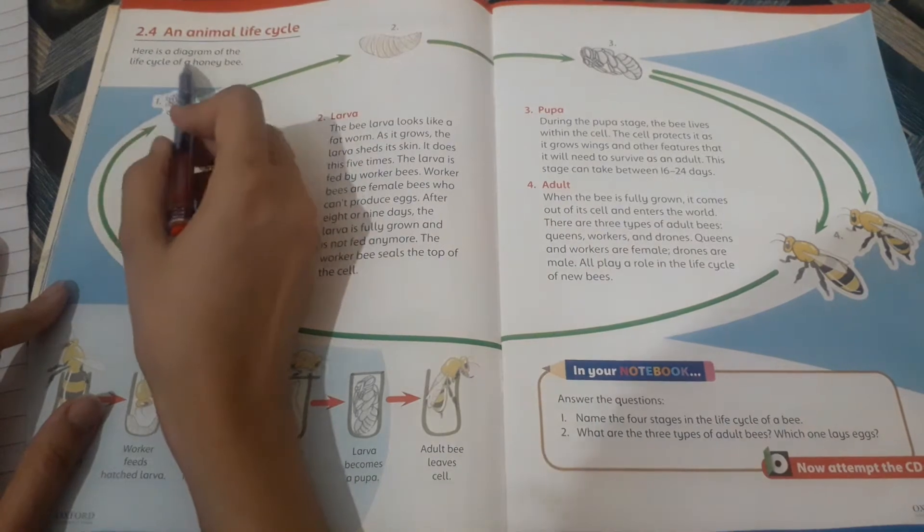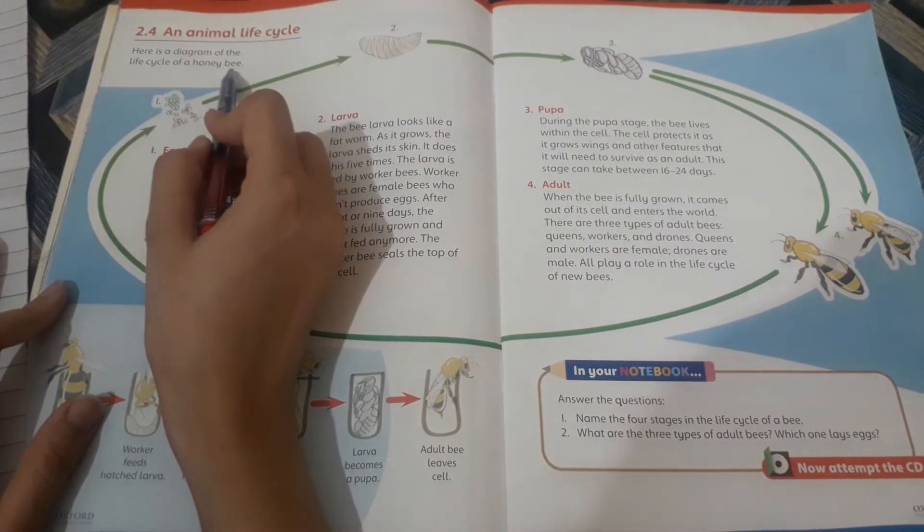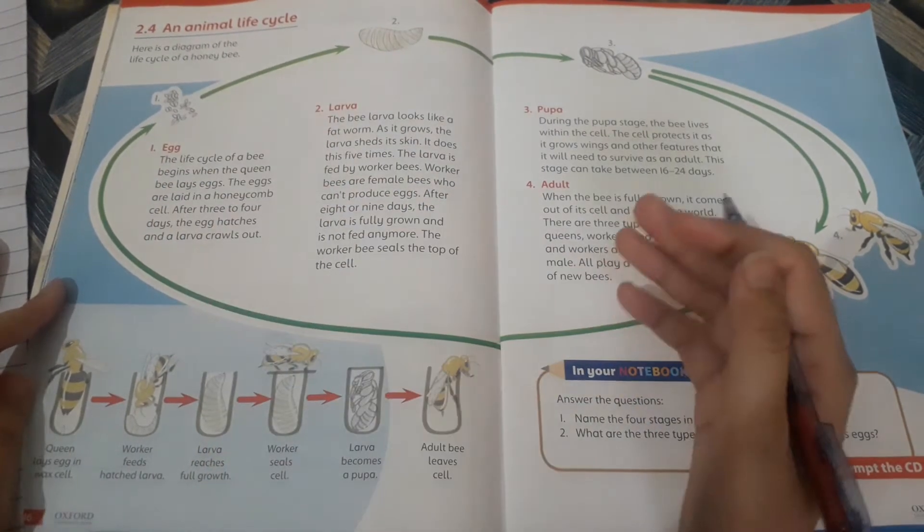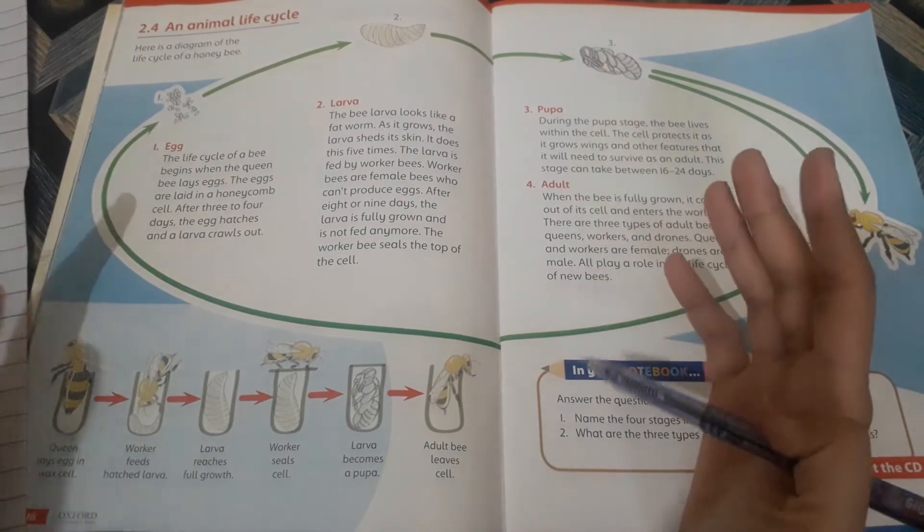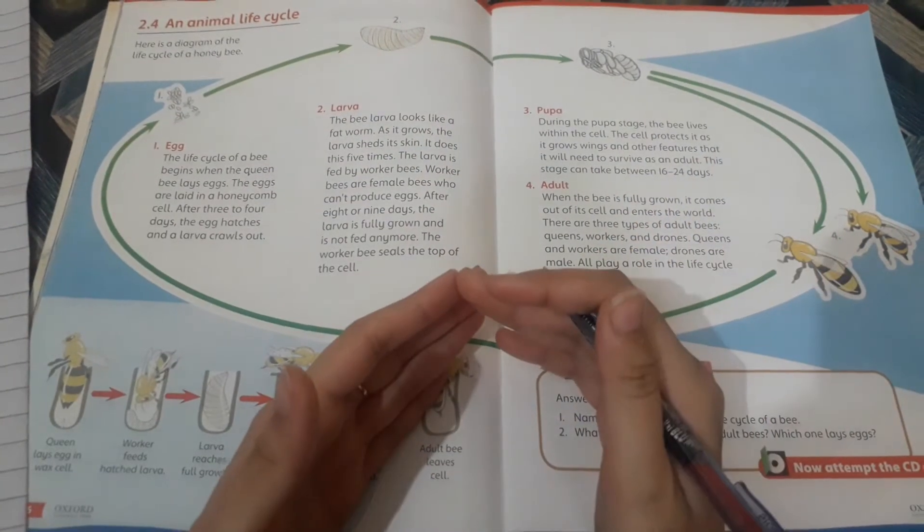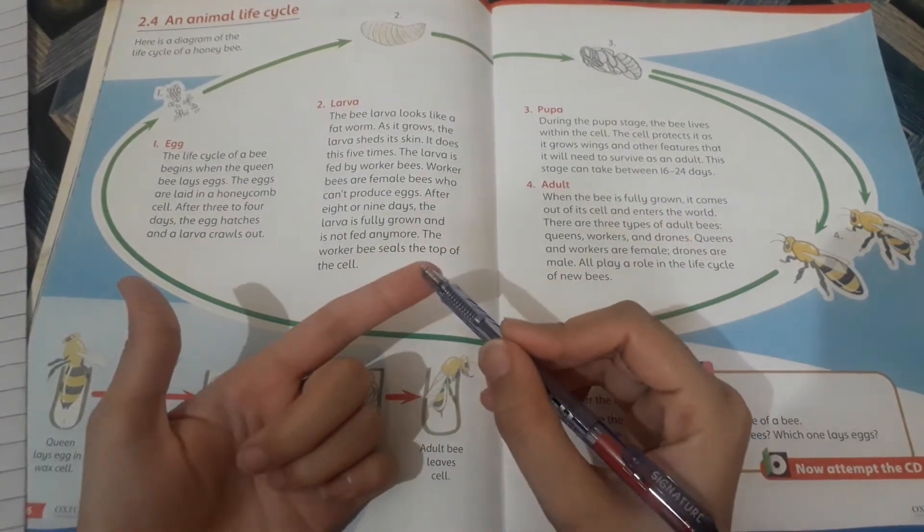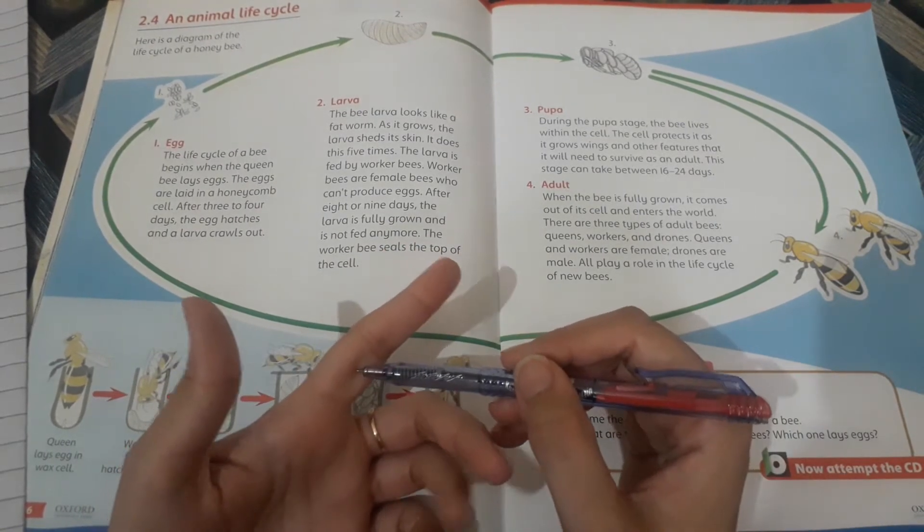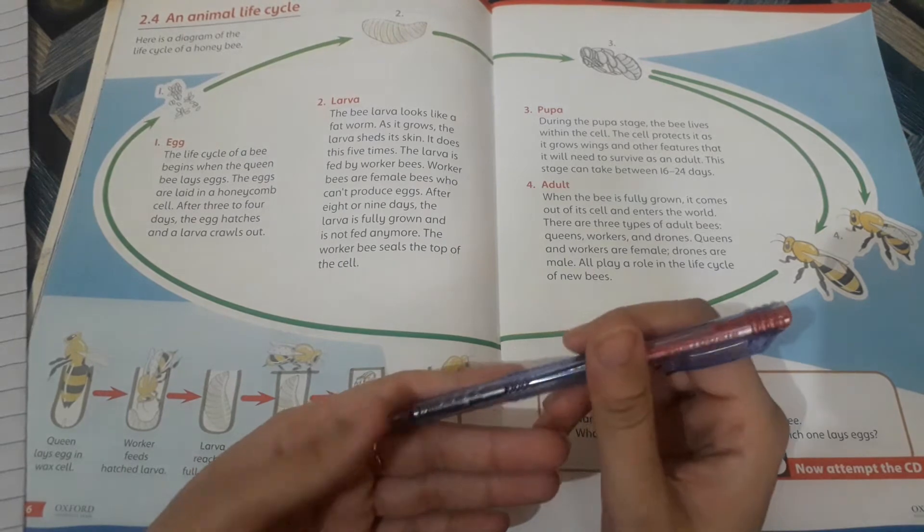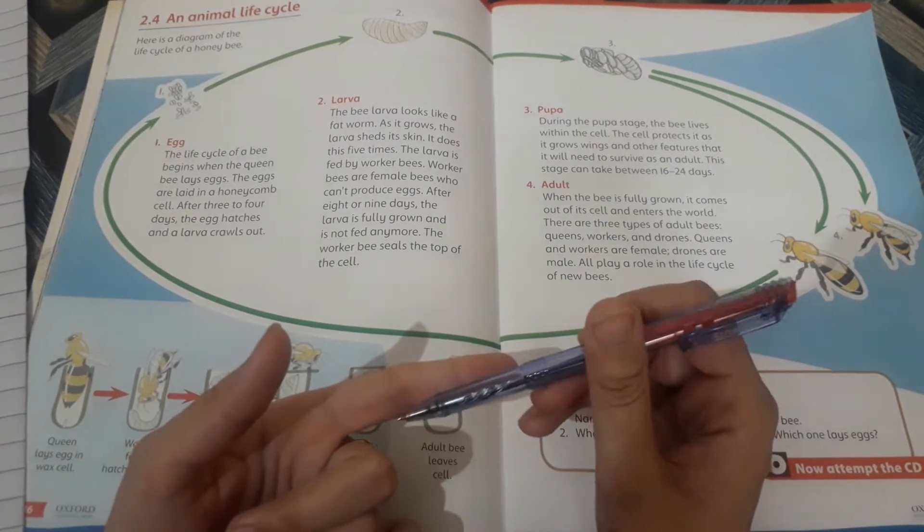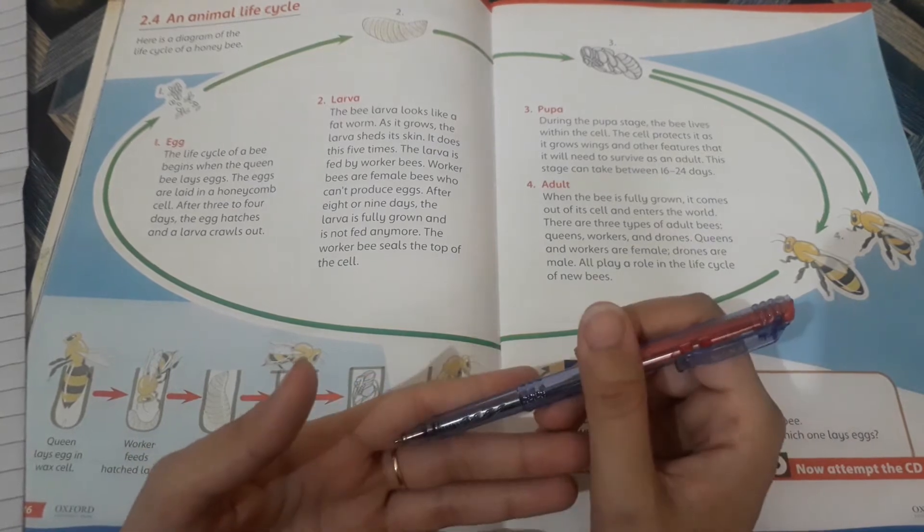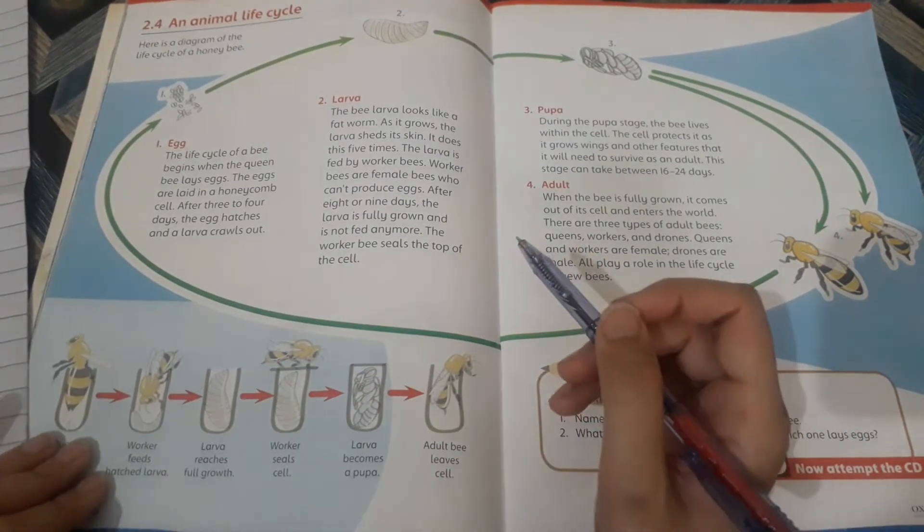Here is a diagram of the life cycle of honeybee. Students, here is given a life cycle of honeybee and I want to tell you that bees are of three types: queen bee, worker bee, and drones. First of all you have to know that bees are of three types.